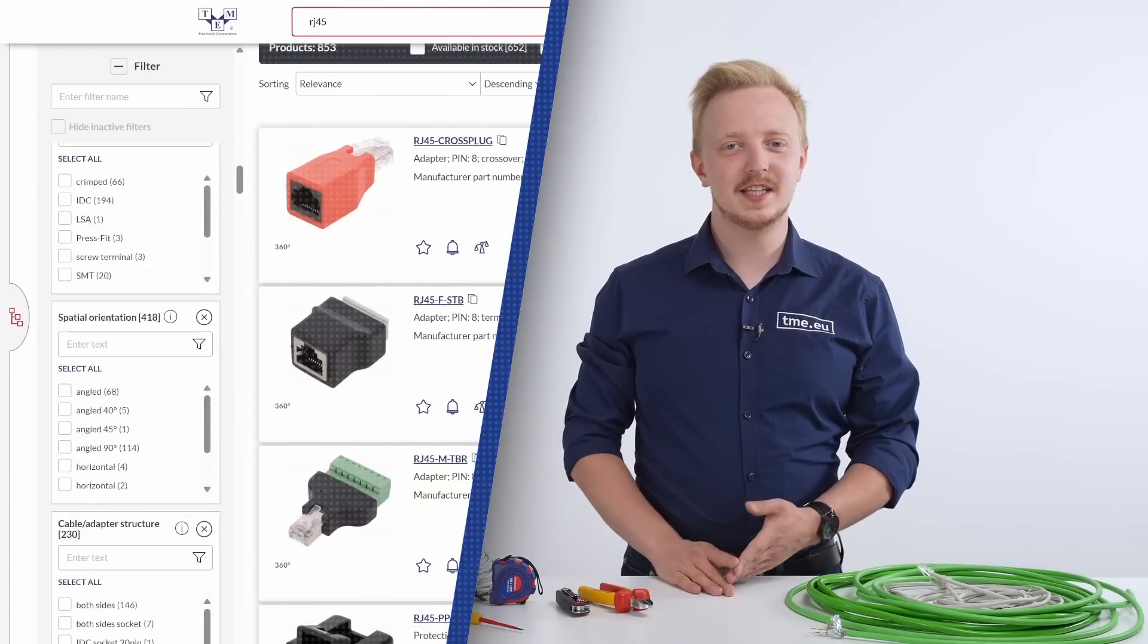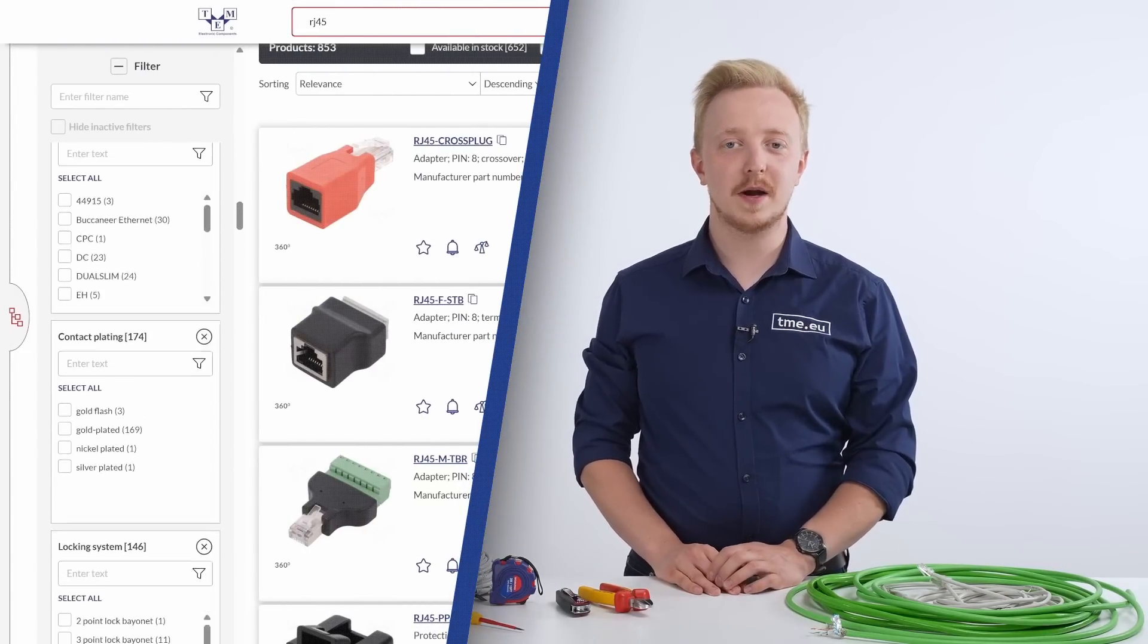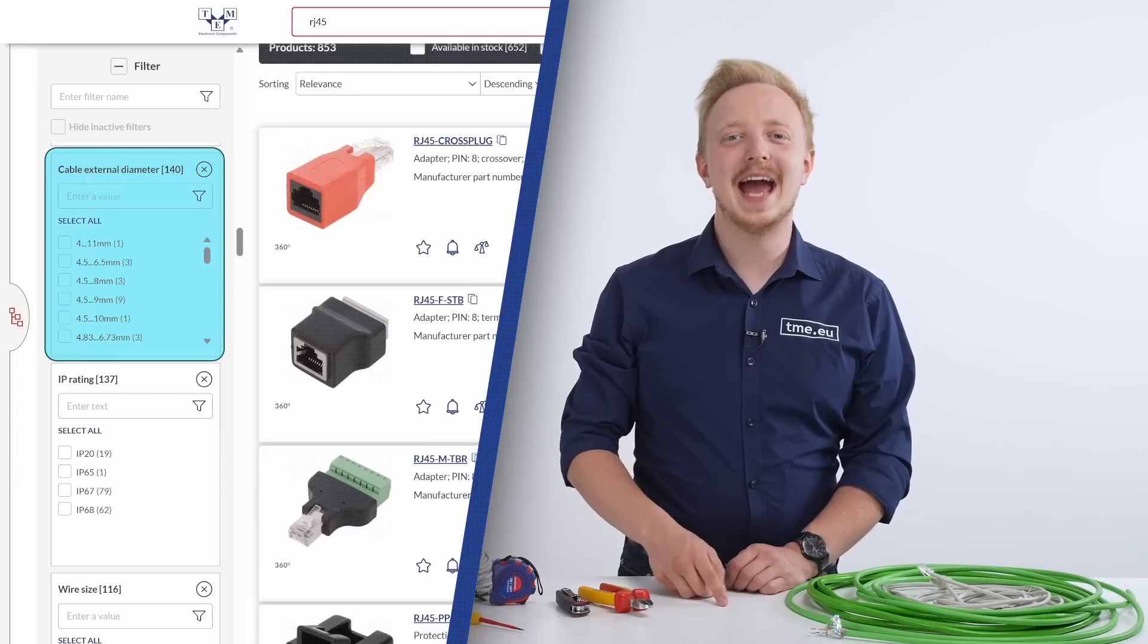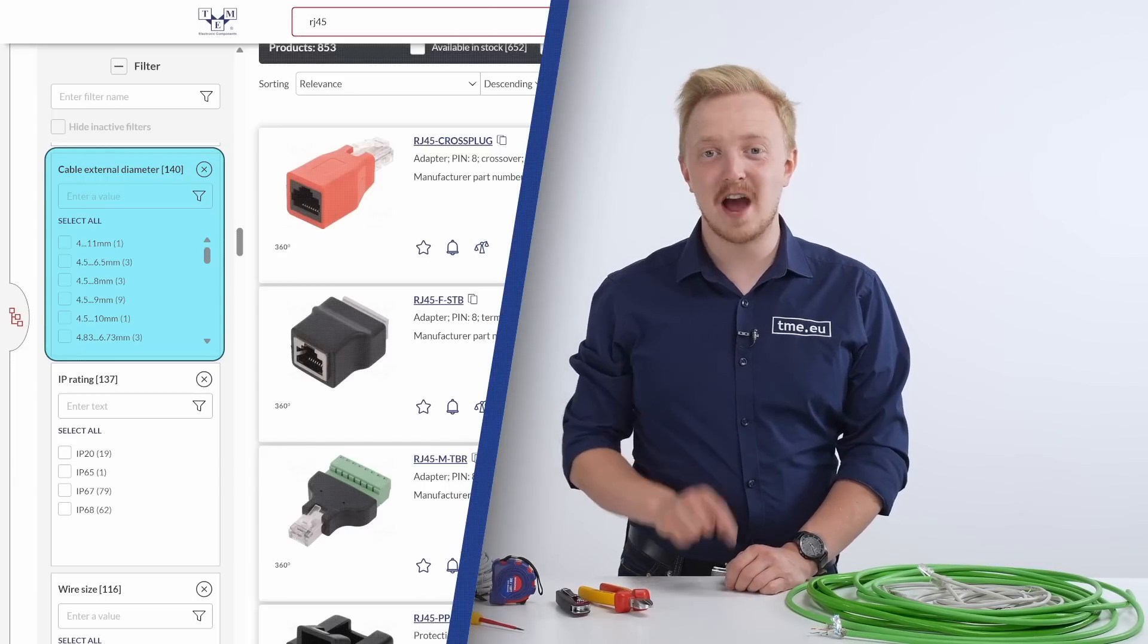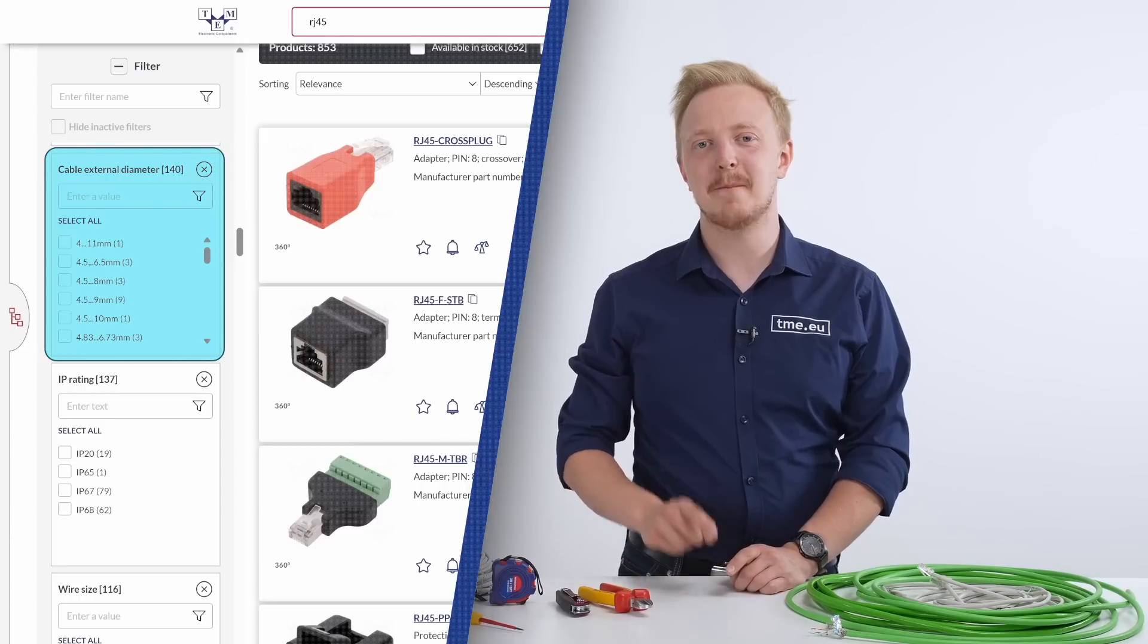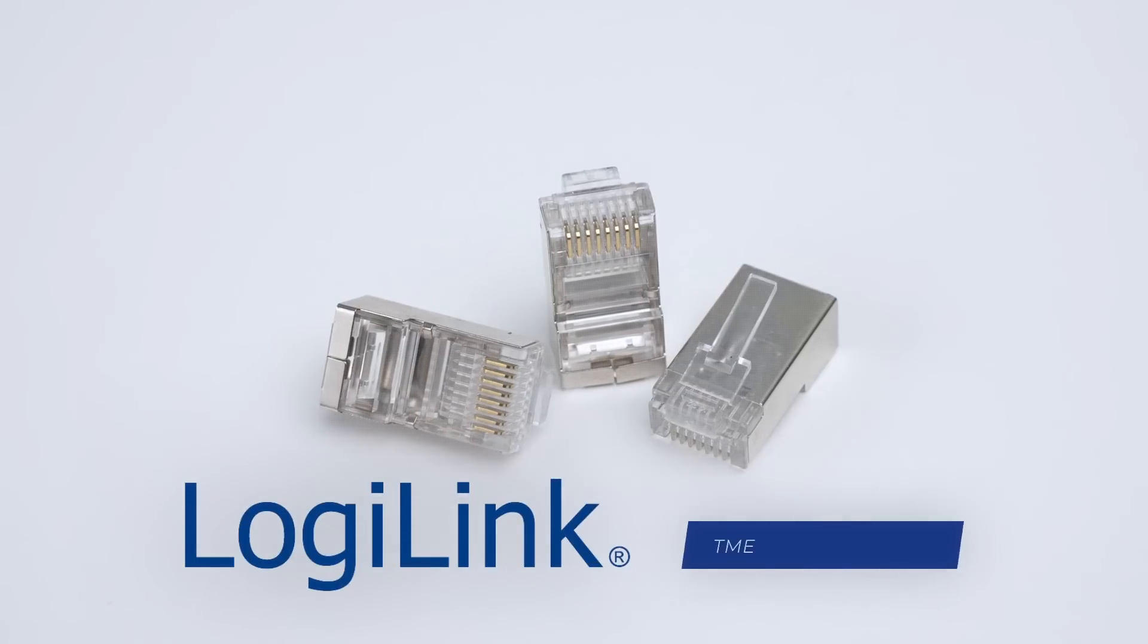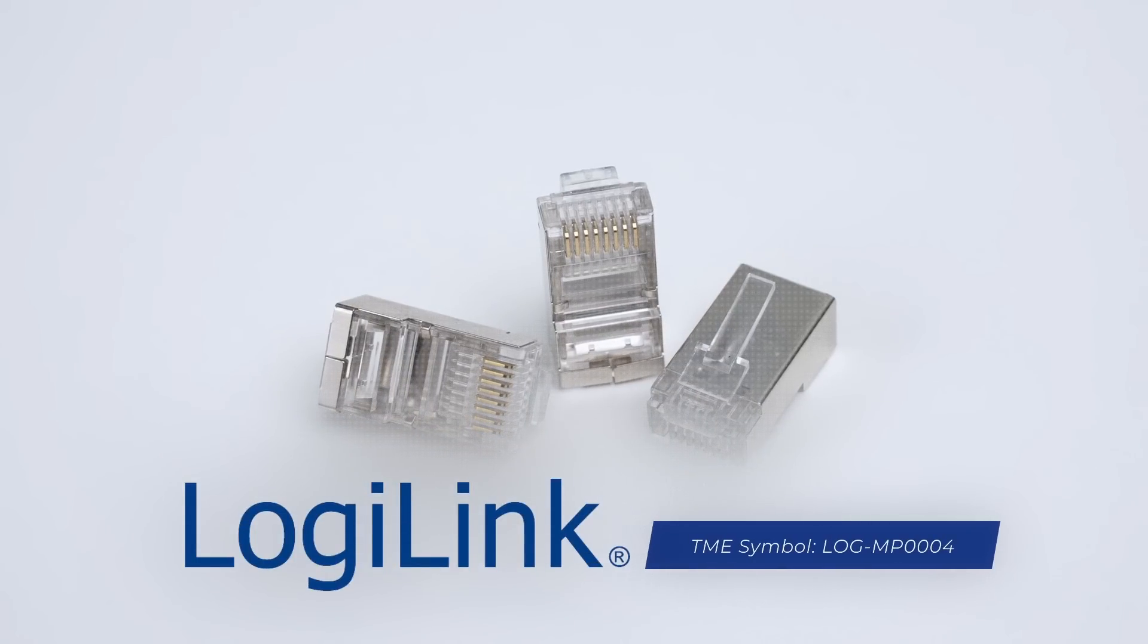Then we have the Ethernet category, the electrical mounting and here it is, the cable external diameter and the wire size. Very important to make sure they match the cable that you have ordered. And also make sure to get the shielded connectors for shielded cables.